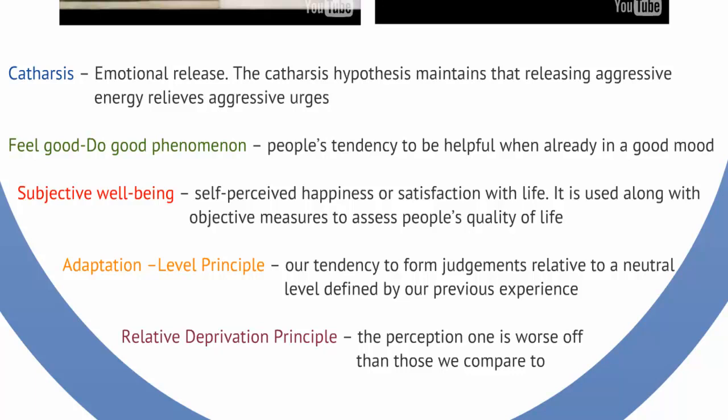Here are a few more terms to know. Catharsis means an emotional release, usually involving maintaining or releasing some kind of aggressive energy. The feel-good-do-good phenomenon refers to people's tendency to be helpful when they're already in a good mood, so our behavior is affected by our emotions. Subjective well-being refers to our self-perceived level of happiness or satisfaction and can assess people's quality of life. The adaptation level principle means we form judgments around what's usually normal for us, whether perception of sound, light, or a certain emotional state. Finally, the relative deprivation principle: the perception that we are worse off than those we compare ourselves to.